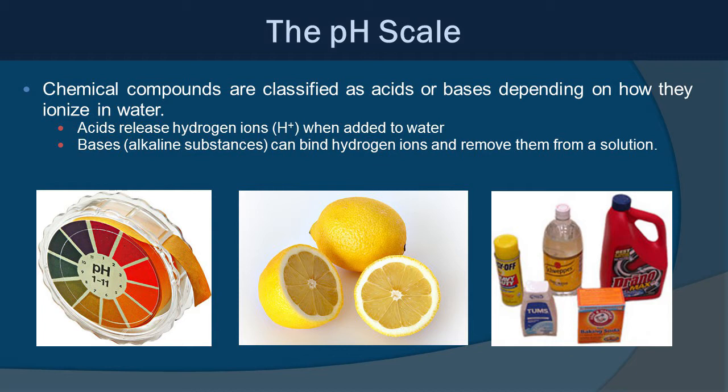You may have done one of those labs where you have pH paper, put a little dab of a substance on it, and see what color it matches to find out the pH. You might find that lemons, for example, are very acidic, and that baking soda is very basic — that kind of thing.